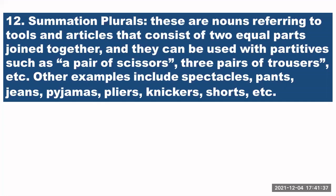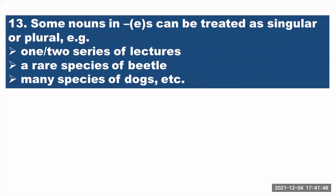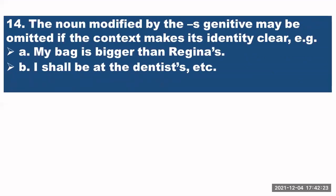Omitting the partitive with summation plurals is a grammatical blunder. Rule number thirteen — some nouns ending in -es can be treated as singular or plural. For example: 'a series of lectures' or 'two series of lectures'; 'a species of beetle' or 'many species of dogs.' These nouns give you some freedom — you can use them with singular or plural depending on the sense in which you are using them.